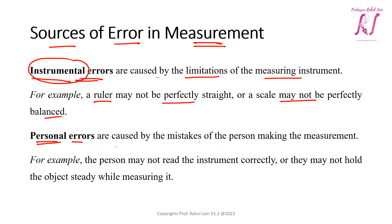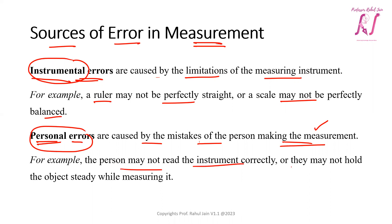Personal errors are caused by mistakes of the person making the measurement. For example, a person may not read the instrument correctly, or they may not hold the object steady while measuring it. These are considered personal errors.